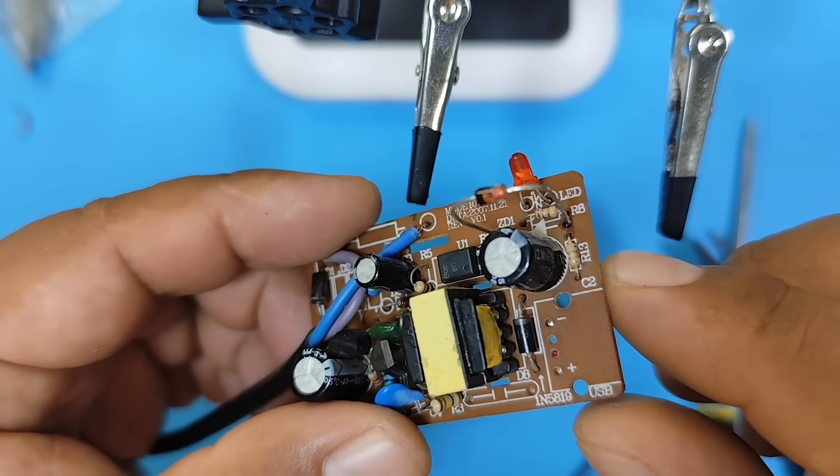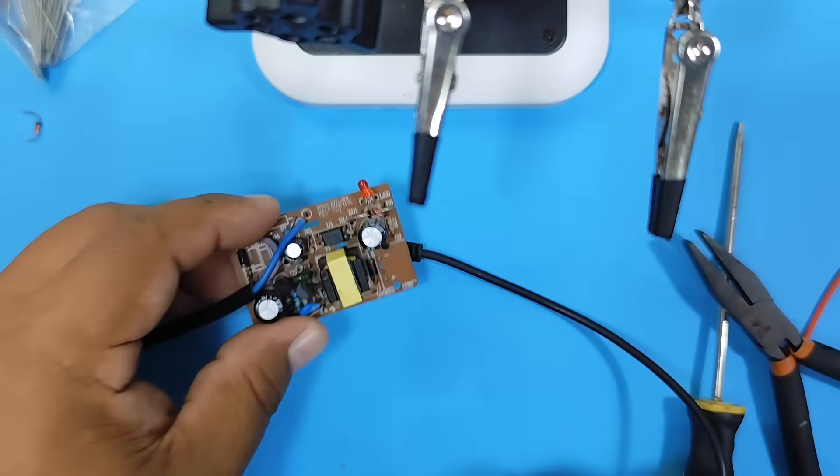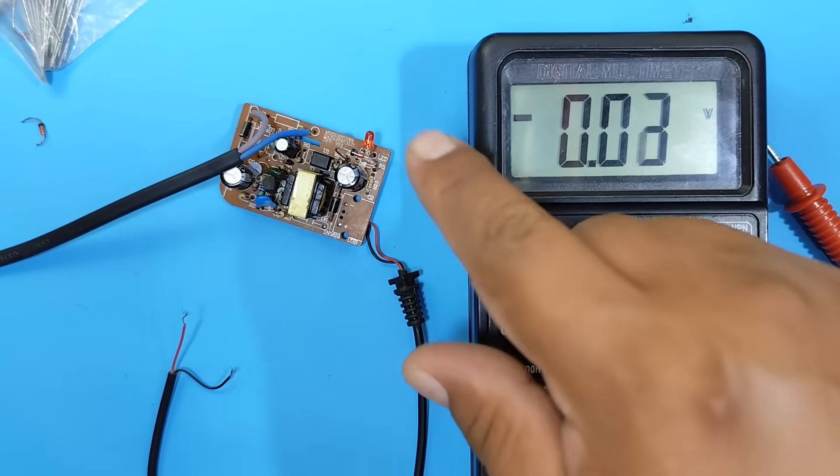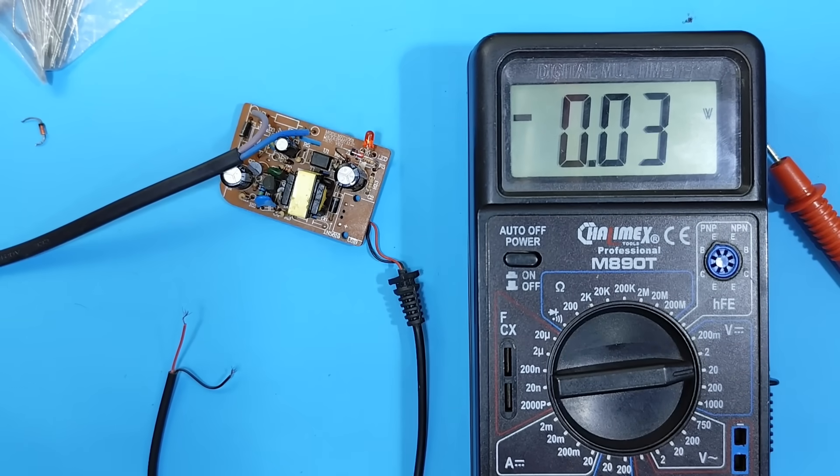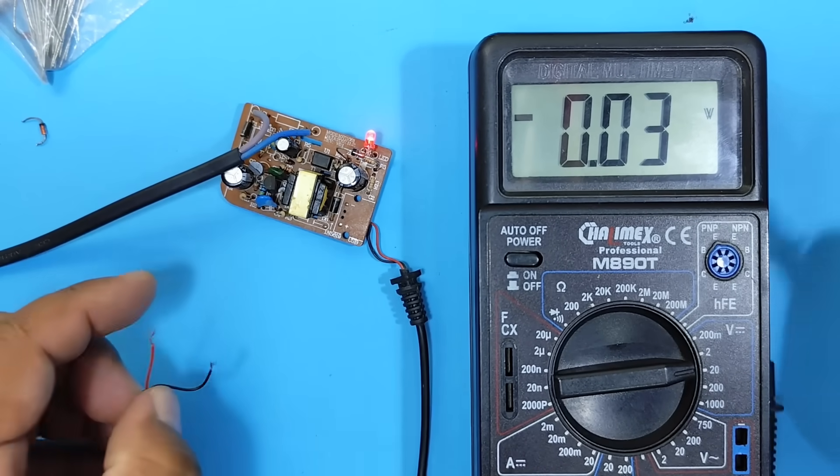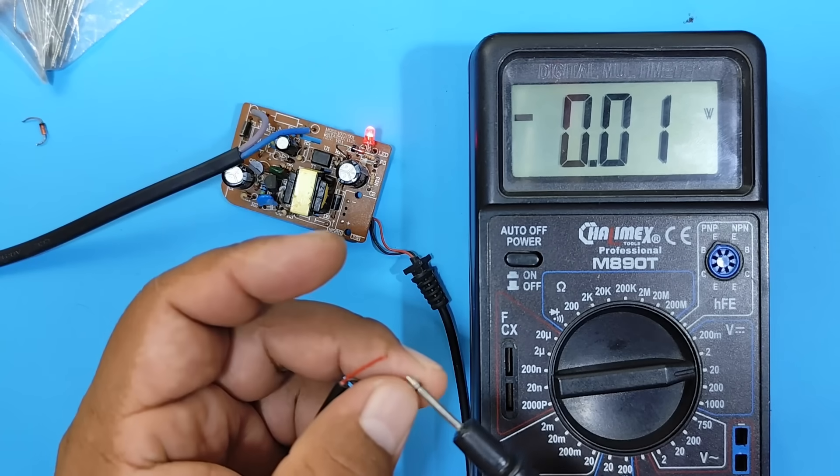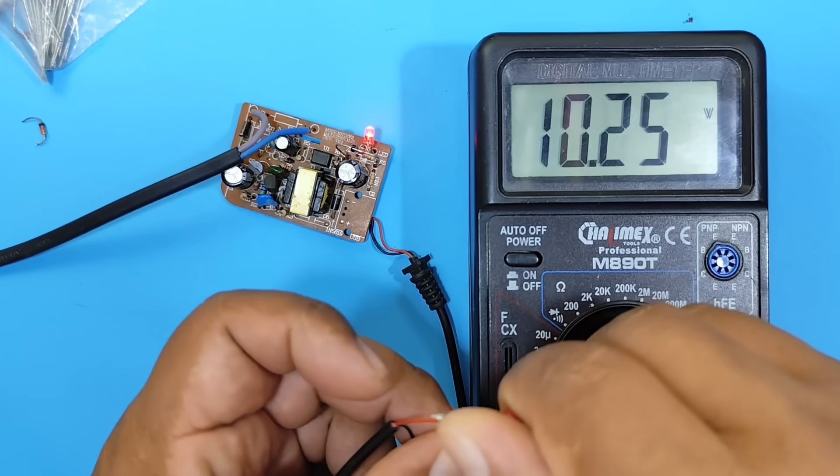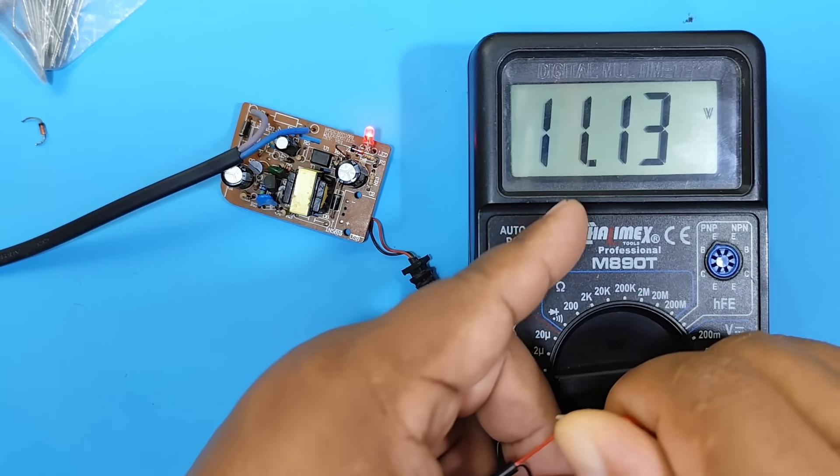Ok, let's check the output voltage. Now, let's connect the cell phone charger and see the output voltage. We have 11 volts with the 10 volt Zener diode.